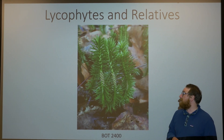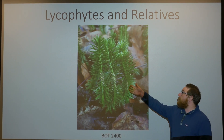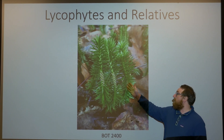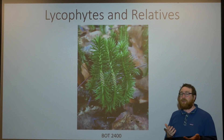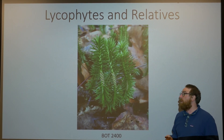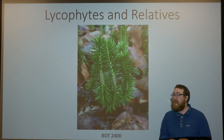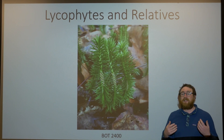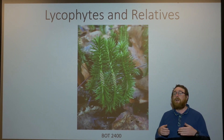Lycophytes, like this club moss here, exhibit very particular growth behavior. You can actually age these plants by looking at their differences between growing sporangia and the rest of their body. This is a trait — this annual growth — that's really common in many trees of temperate climates. Lycophytes are going to increasingly display these traits that we see in more highly derived plants.